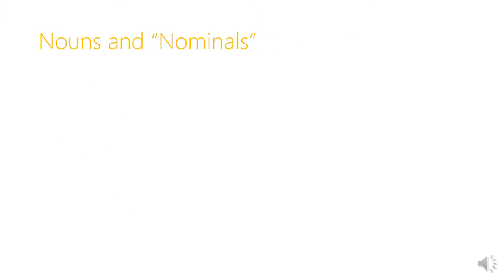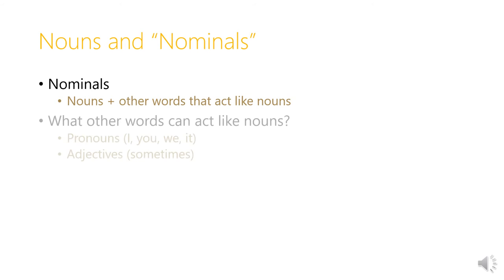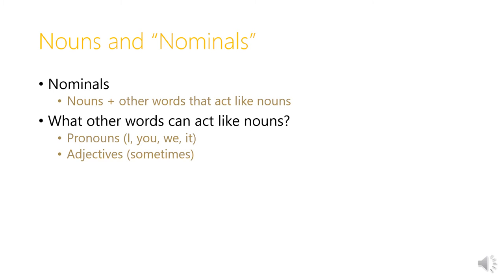Nouns belong to a larger category called nominals. Nominals as a category includes nouns, plus other words that act like nouns in a clause. What other words can act like nouns? Primarily we're talking about pronouns — words like I, you, we, and it. But also things like demonstrative pronouns, this and that. And we're also talking about adjectives, which sometimes can act as a noun — we call this the substantive use of adjectives.